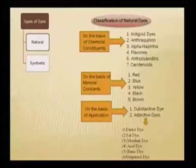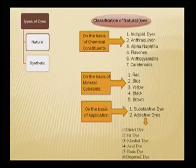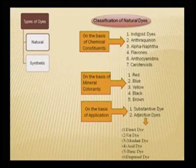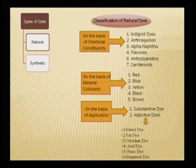On the classification of dyes based on chemical constituents, they can be indigoid dyes, anthraquinone dyes, alpha-naphthol dyes, flavone dyes, anthocyanin dyes and carotenoid dyes. Today's lecture will be mainly emphasizing anthocyanidin dyes. On the basis of colorant present, dyes can be segregated into red, blue, yellow, black or brown types. Based on how they adhere to fabric, they can be substantive dyes or adjective dyes — including direct dye, vat dye, mordant dye, acid dye, basic dye and dispersed dye.